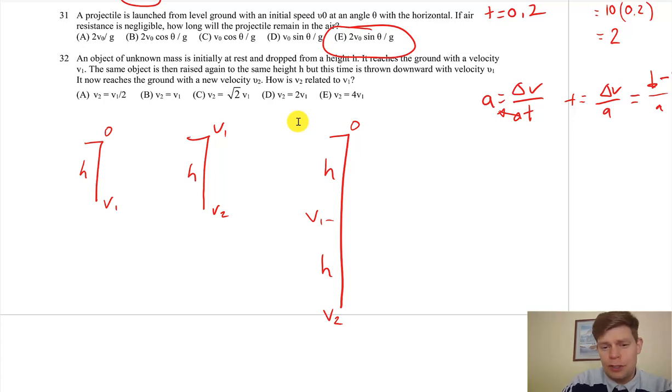So if we want to know how v2 is related to v1, v1 would be—if we use v_f² equals v_i² plus 2ad—v_i² is just zero because we're starting there, and d is h and 2h. The v_i squared or v1 squared—or why don't we just do v1? It's going to equal √(2ah).